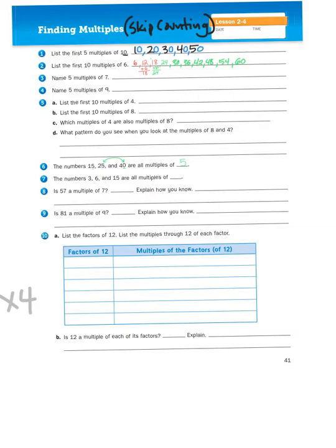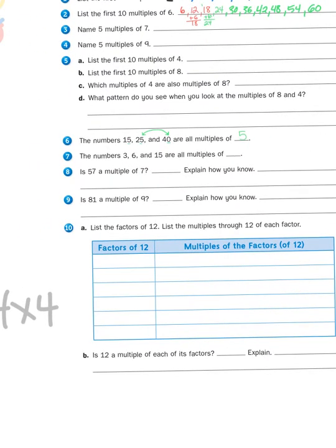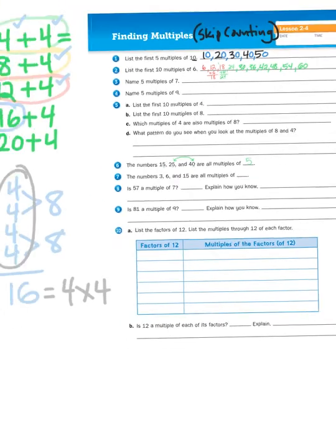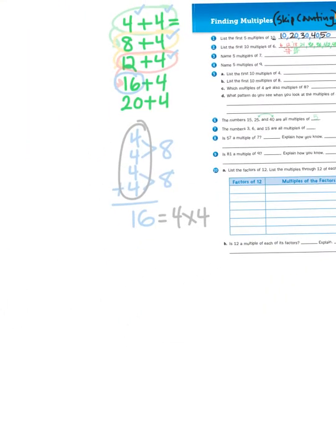Let's do one more. Let's take a look at this table at number 10. It says, list all the factors of 12, list the multiples through 12 of each factor. So, when we were thinking of factor pairs in the previous lesson, we wanted to know all the different ways we could multiply two numbers together to get to 12. So, let's think about that for a second.